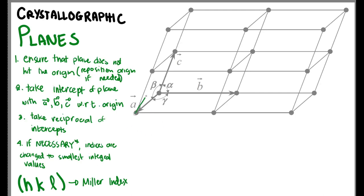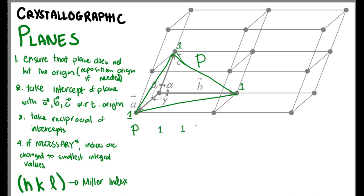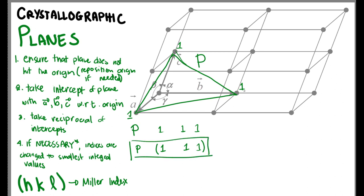As an example, let's determine the Miller index of plane P. First, the plane does not pass through the origin, so no need to reposition. The plane intersects A at 1, B at 1, and C at 1, giving intercepts 1, 1, 1. Taking the reciprocals: 1/1, 1/1, 1/1 = 1, 1, 1. So the Miller index is (1 1 1), enclosed in parentheses.